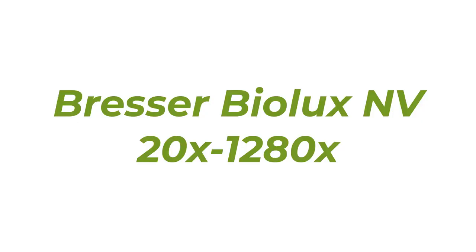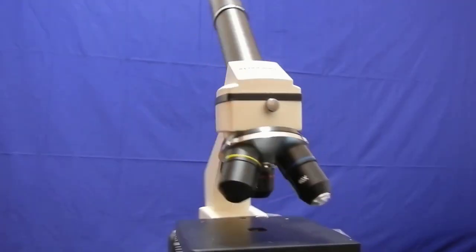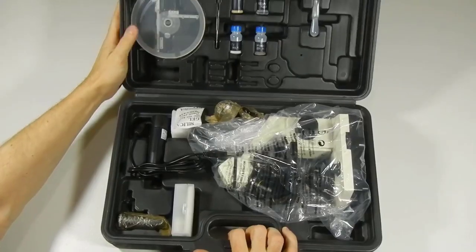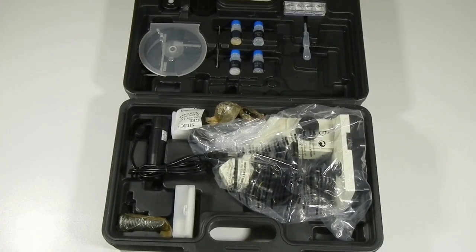Number 1. Bresser Biolux NV20x-1280x. For our money, the Bresser Biolux NV20x-1280x is the best microscope for beginners, although it aims to also be suitable for advanced users. This device comes with plenty of accessories,